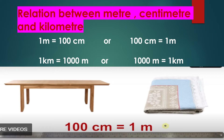Now we are going to learn the relation between meter, centimeter, and kilometer. Meter is the basic unit, centimeter is the smaller unit, and kilometer is the biggest unit of measuring length. 1 meter is equal to 100 centimeters, meaning 100 centimeters make 1 meter. 1 kilometer is equal to 1000 meters, meaning 1000 meters make 1 kilometer.